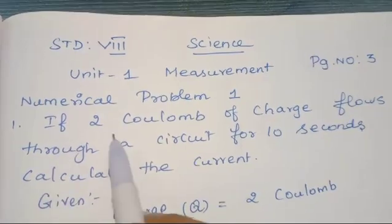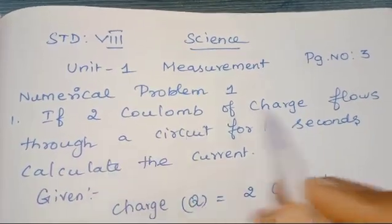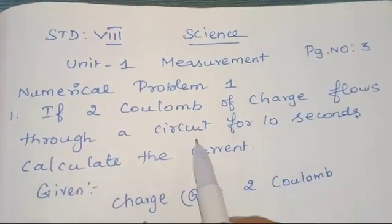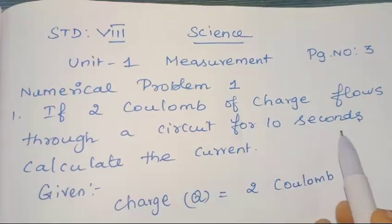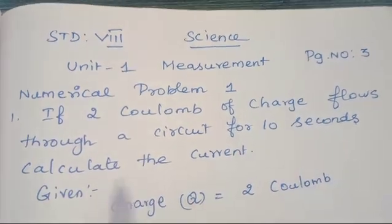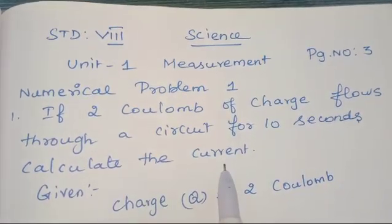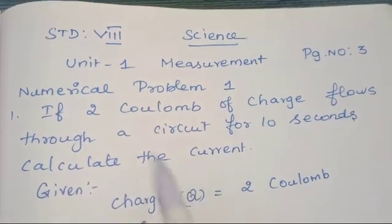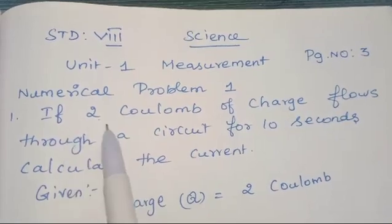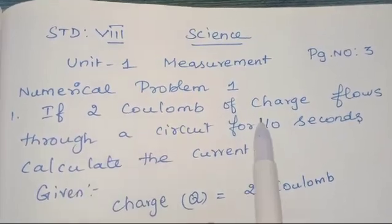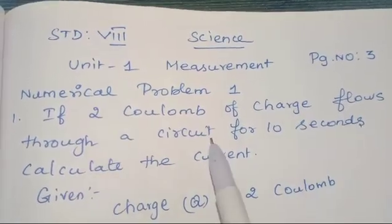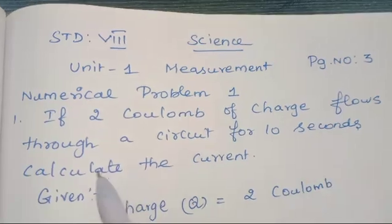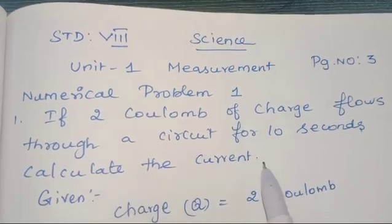If 2 coulomb of charge flows through a circuit for 10 seconds, calculate the current.